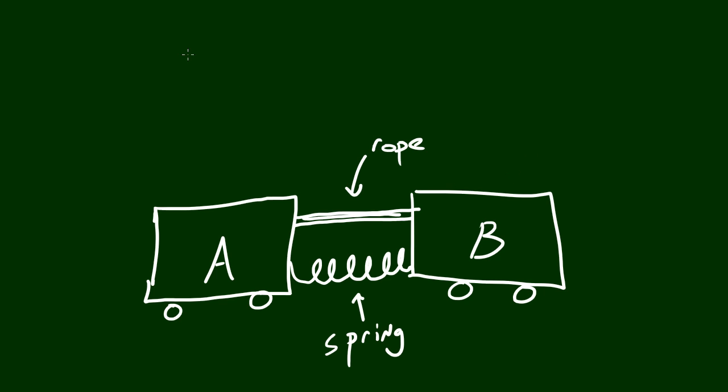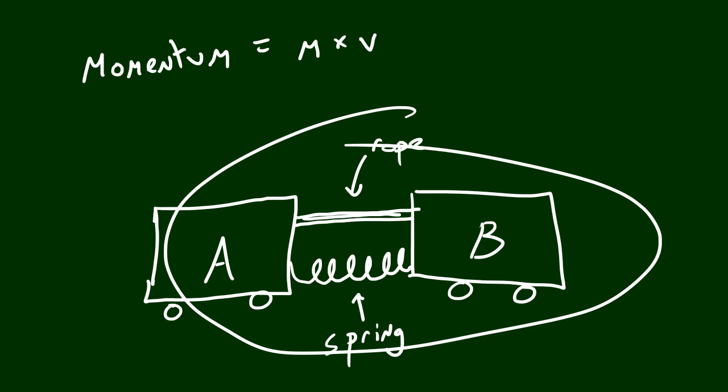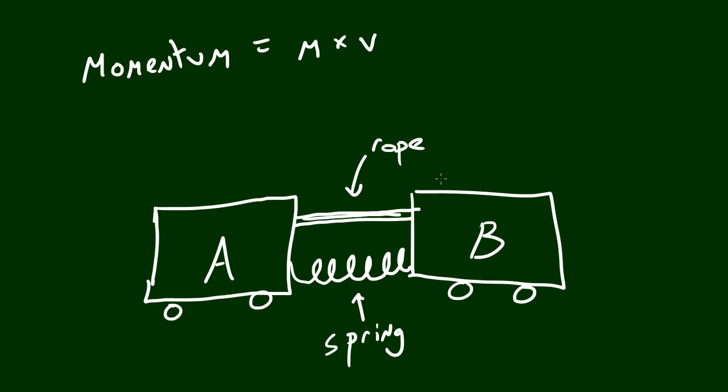But the new thing that we learned is the momentum is also zero. Because momentum we know is equal to mass times velocity. So if you say that this is actually one big object and took the mass of it, well the mass doesn't even matter because this system has a velocity of zero.